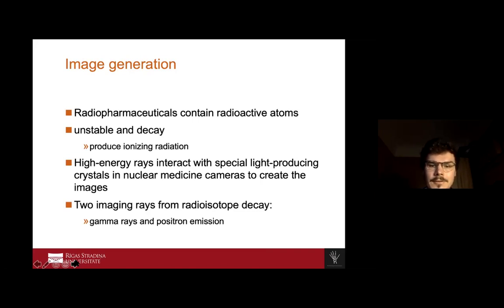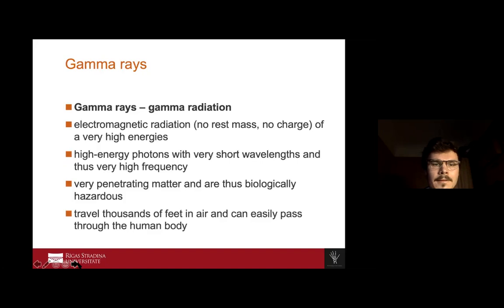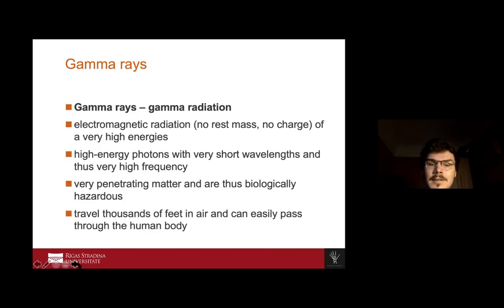There are two types of rays used: gamma rays and positron emission. Gamma radiation is an electromagnetic radiation — it has no rest mass and no charge. It has very high energy, with high-energy photons having a very short wavelength and very high frequency. They can penetrate nearly any matter, travel thousands of feet, and easily pass through a human body.